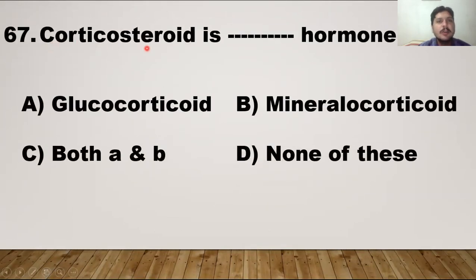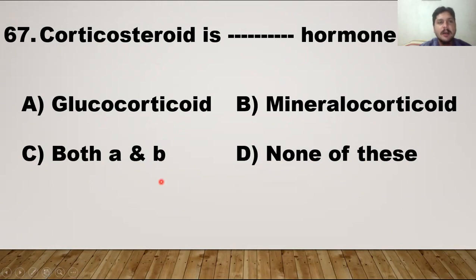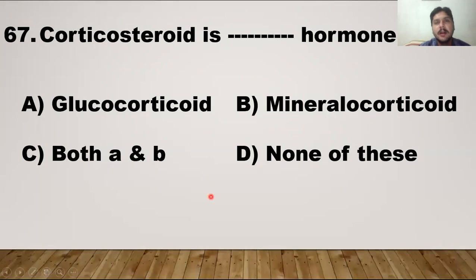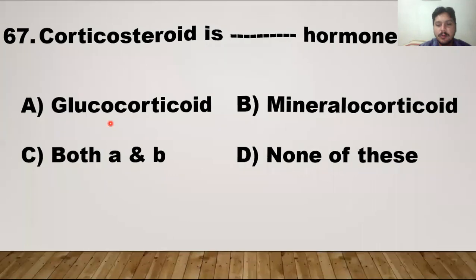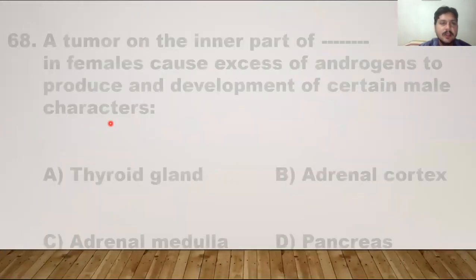Corticosteroid is what kind of hormone? Cortisol is basically glucocorticoid, which controls glucose metabolism. Aldosterone is a mineralocorticoid, which controls minerals. So corticosteroid controls both glucose and minerals, meaning it is both glucocorticoid and mineralocorticoid in nature. Option C is the right answer.